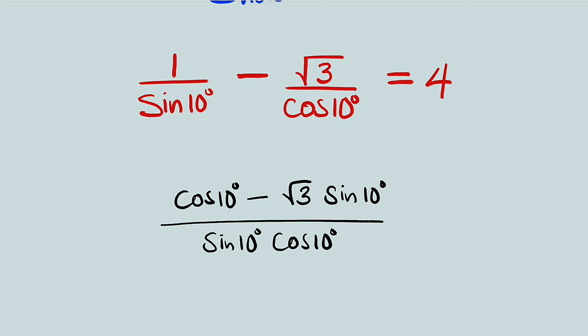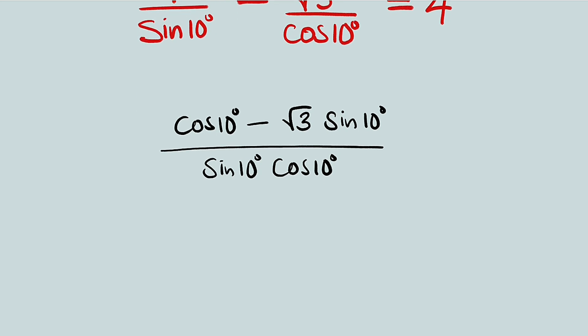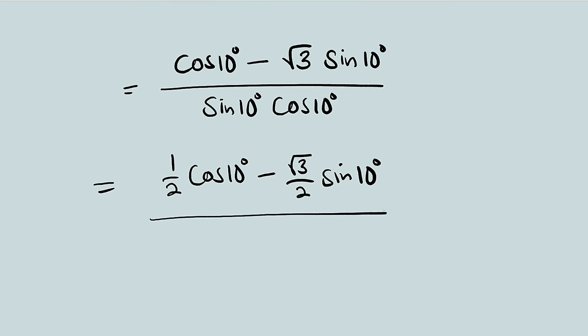Now, I want us to multiply the numerator and denominator by 1 over 2. I don't have to write it because I have already stated that. If I do so, we have 1 over 2 cosine of 10 degrees minus 1 over 2 times root 3 will give us root 3 divided by 2 sine of 10 degrees, divided by 1 over 2 sine of 10 degrees multiplied by cosine of 10 degrees.